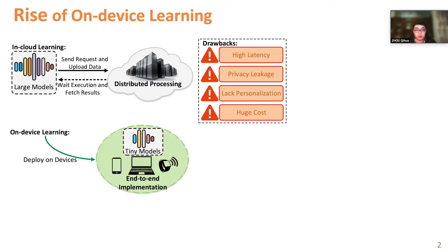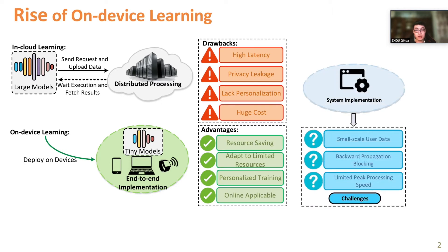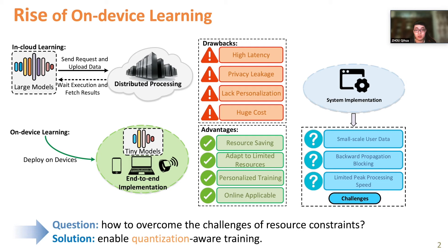These issues promote the rise of on-device learning, which solves these challenges by handling the end-to-end learning process totally on user devices. However, the edge environment often faces limited computational capacity and memory. Thus, breaking the resource constraints is the key to implementing on-device learning systems.